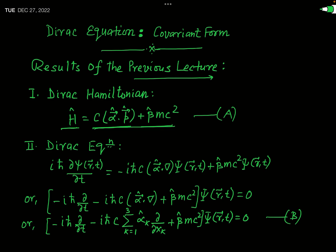As seen in the previous lecture, the Dirac equation is written as: iℏ ∂ψ(r,t)/∂t = −iℏc α·∇ψ(r,t) + βmc² ψ(r,t). This is simply iℏ ∂ψ/∂t = Hψ.